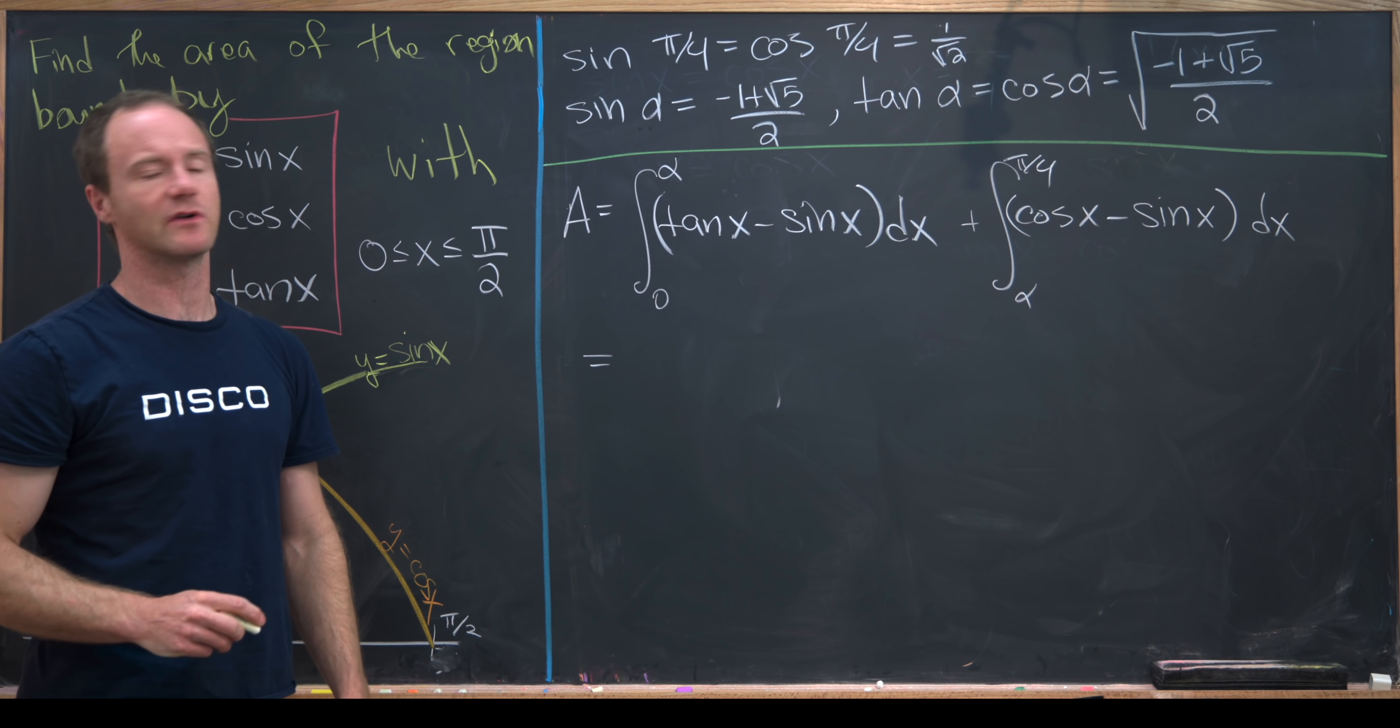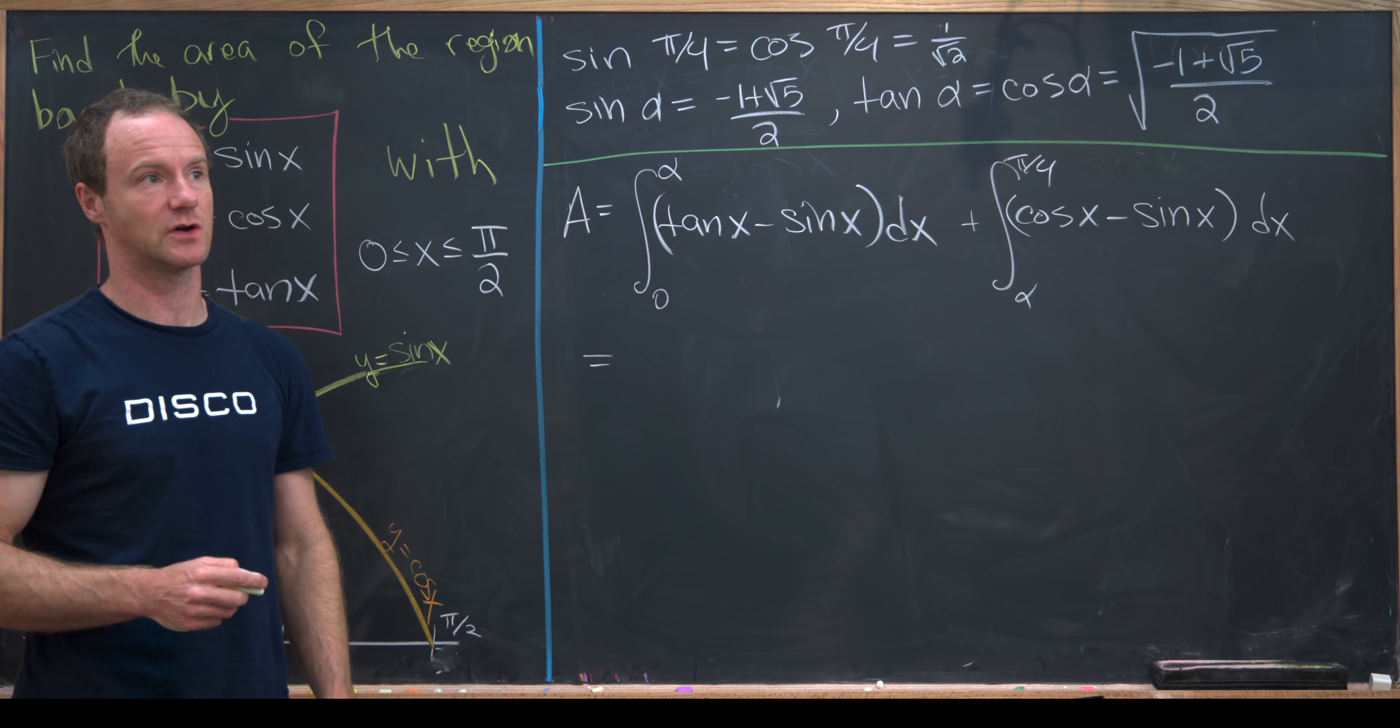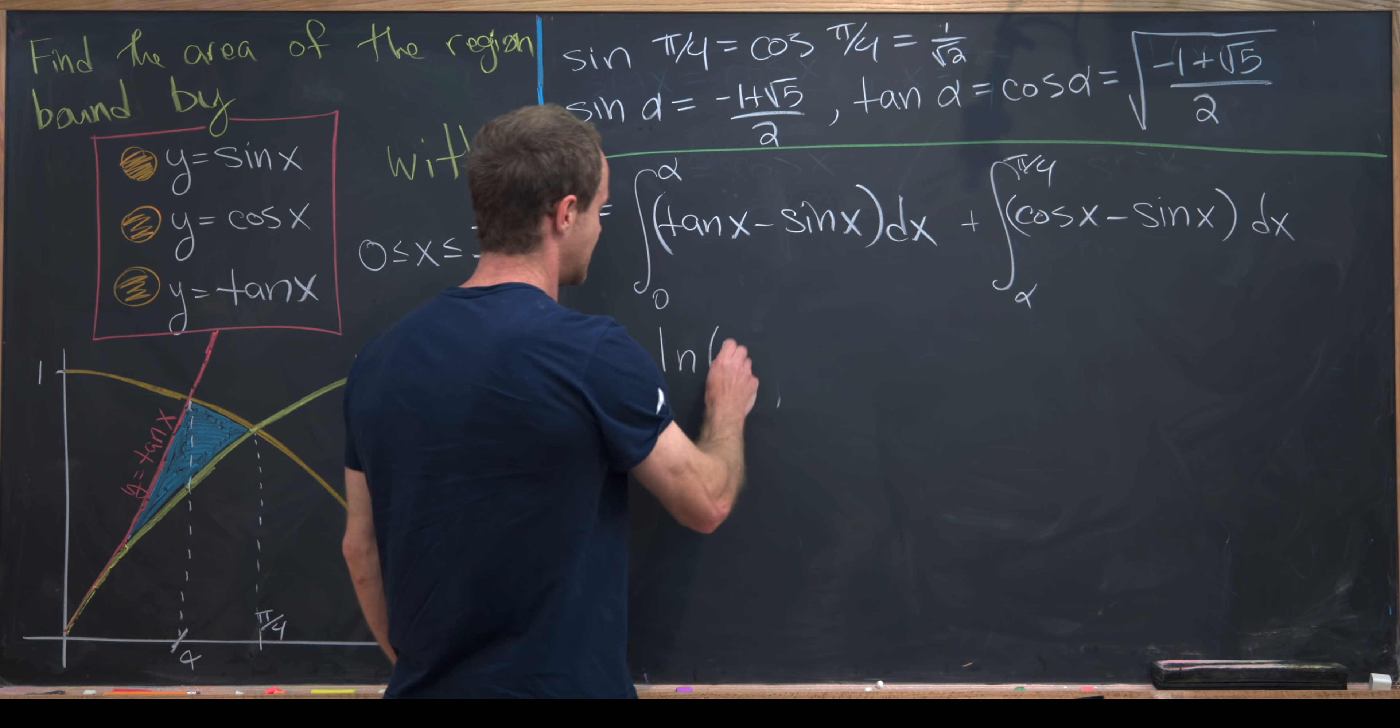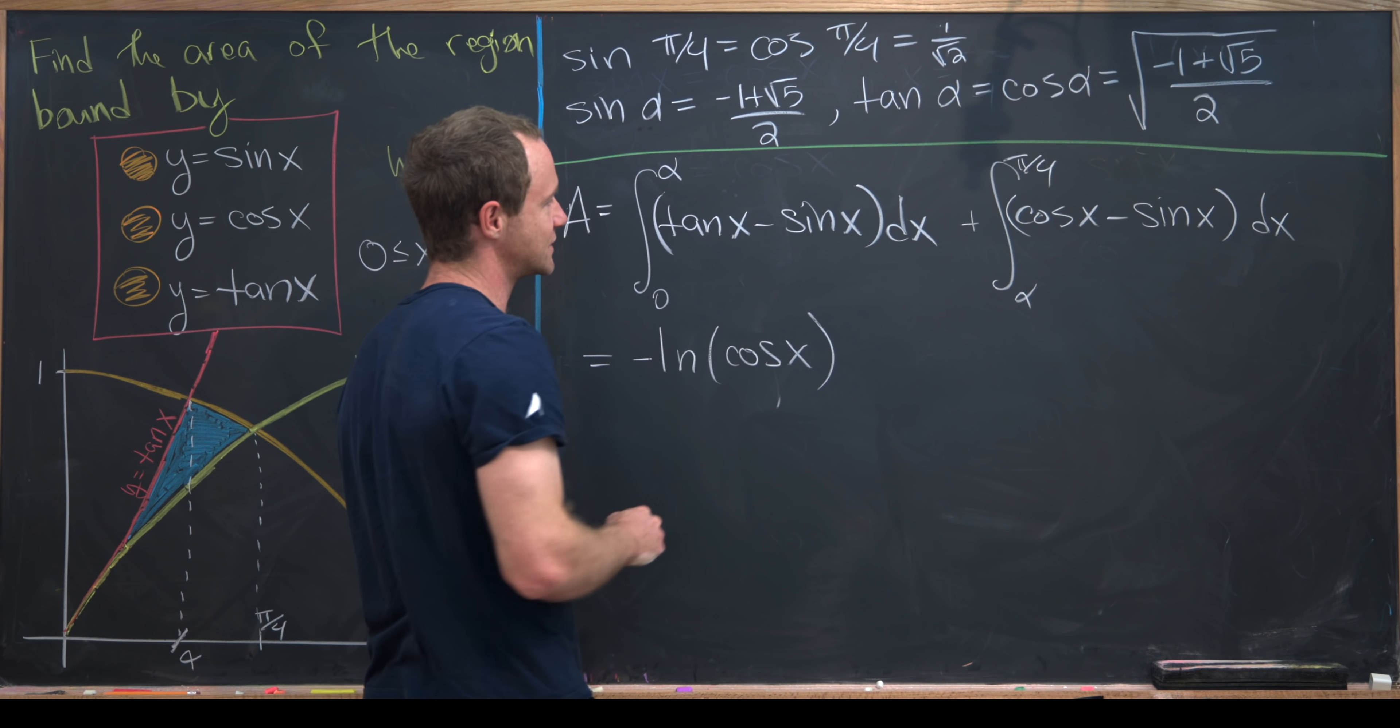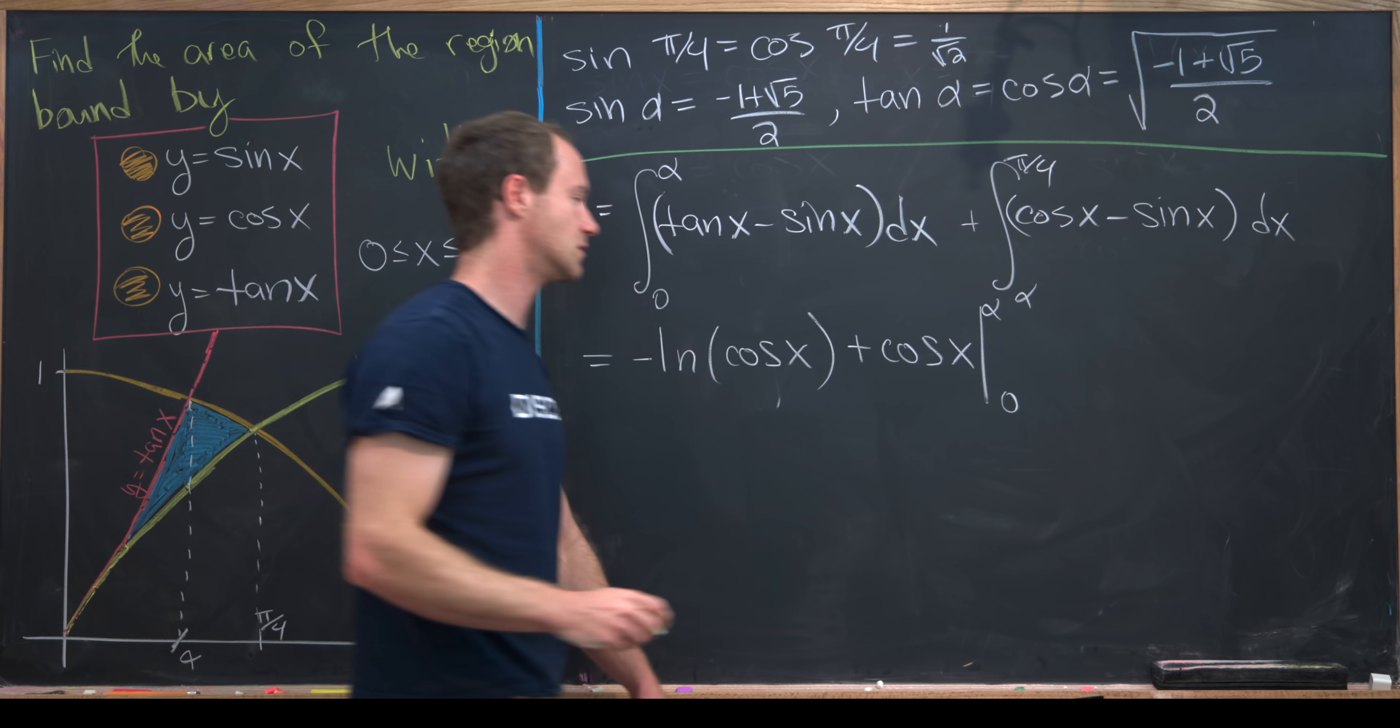It's well known that the antiderivative of tangent is the natural log of secant, but maybe I'll write it as minus the natural log of cosine because that's the same thing using logarithm rules. So this is minus natural log of cosine of x. We don't need absolute values there because we're on this region between 0 and pi over 2. Then the antiderivative of sine is negative cosine, but that minus will cancel giving us plus cosine of x. We need to evaluate that from 0 to alpha.